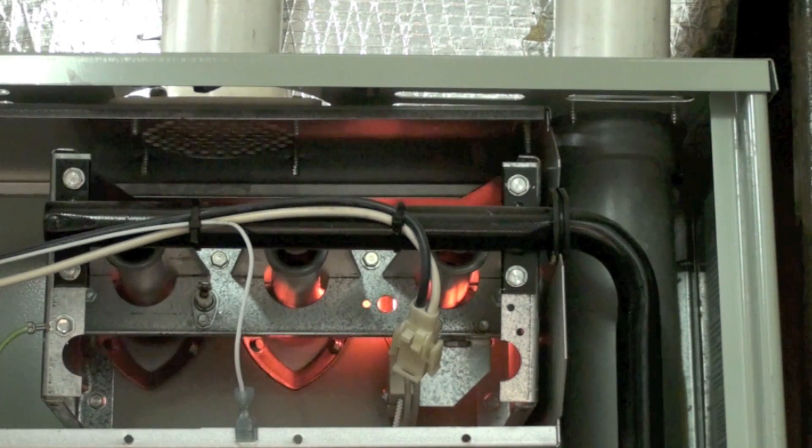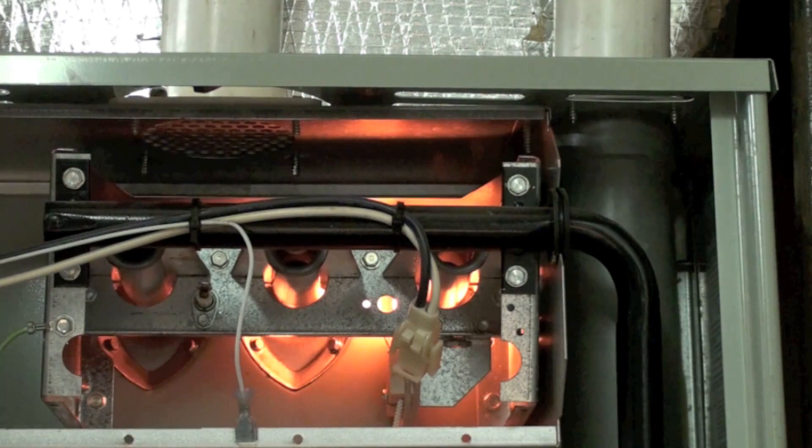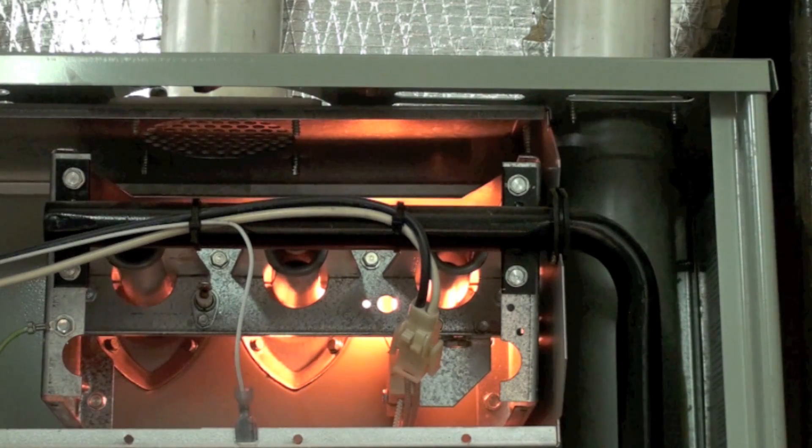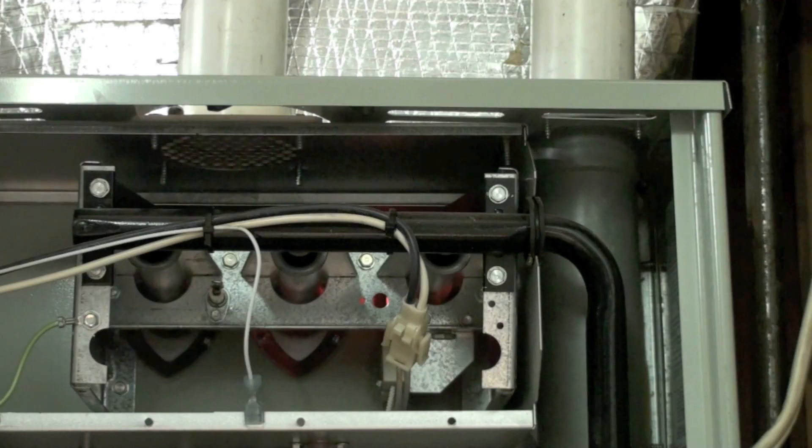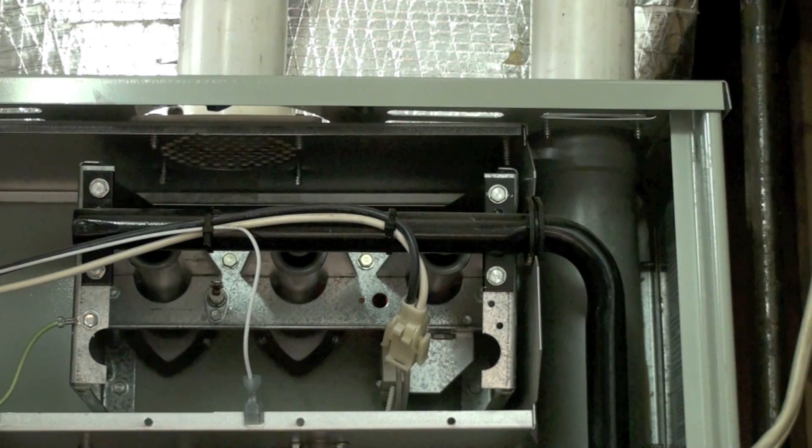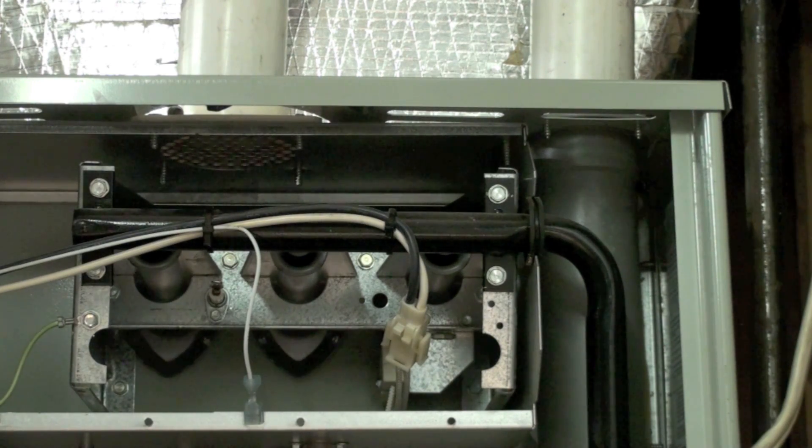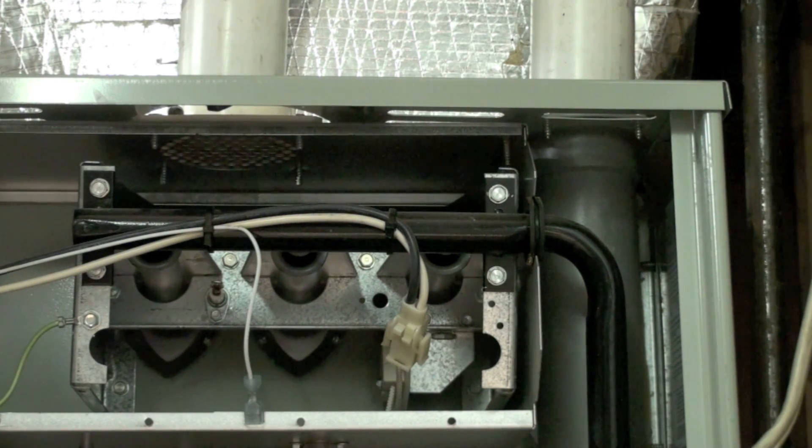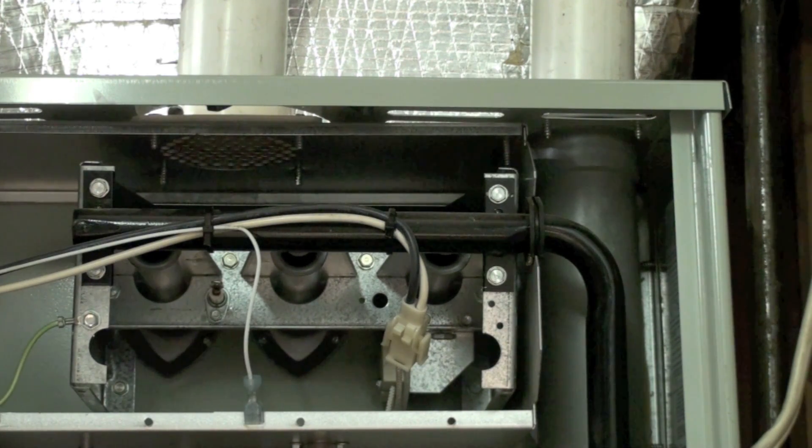Now the burners have shut off. The hot surface igniter is coming on again. It's acting as though it did not sense flame. Now it's going to try three times and then it's going to shut down. Soon as this thing shuts down, we'll pull that flame rod out of there and take a look at it and see what it is.